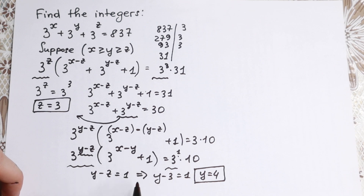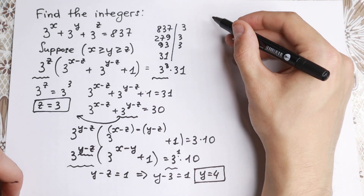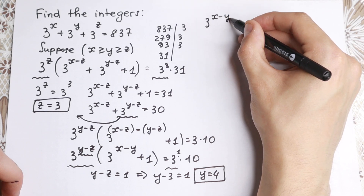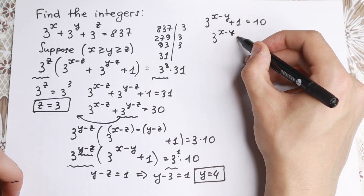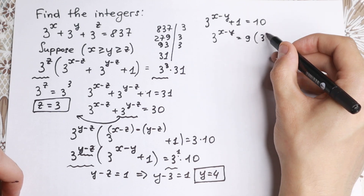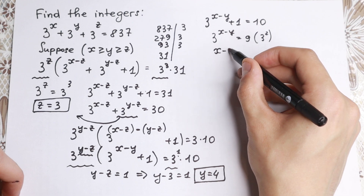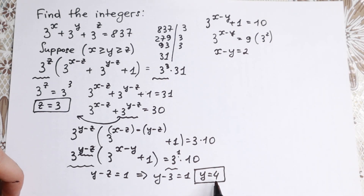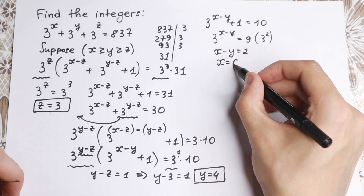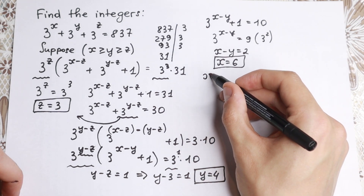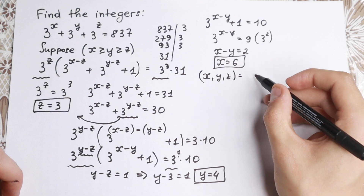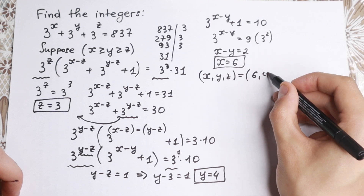We still have the parenthesis equal to 10. So 3 to the power x minus y plus 1 equals 10, which gives 3 to the power x minus y equals 9. That's 3 squared, so x minus y equals 2. Since y equals 4, we get x equals 6. So our solution is the triple x, y, z equal to 6, 4, 3.